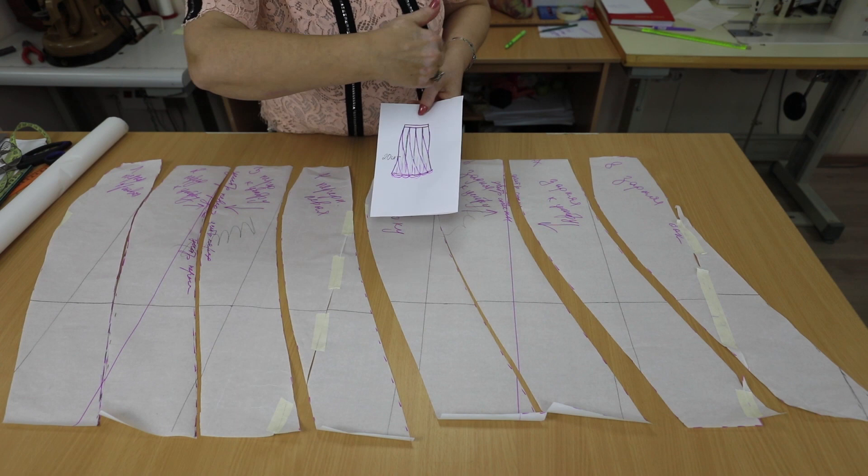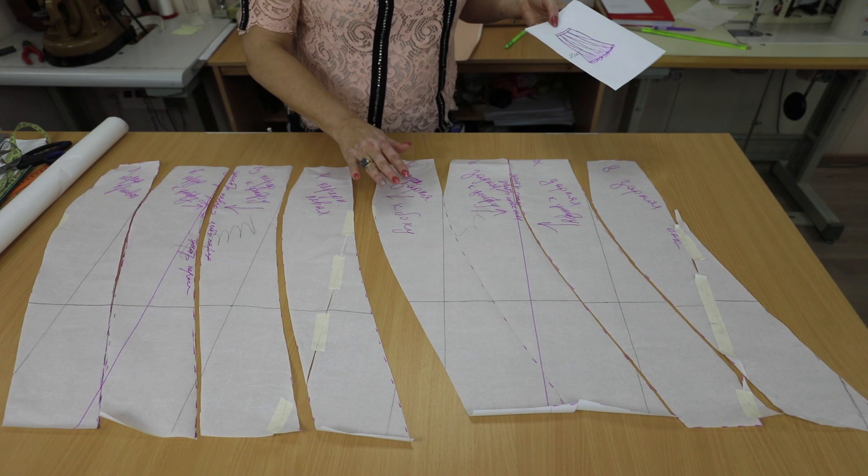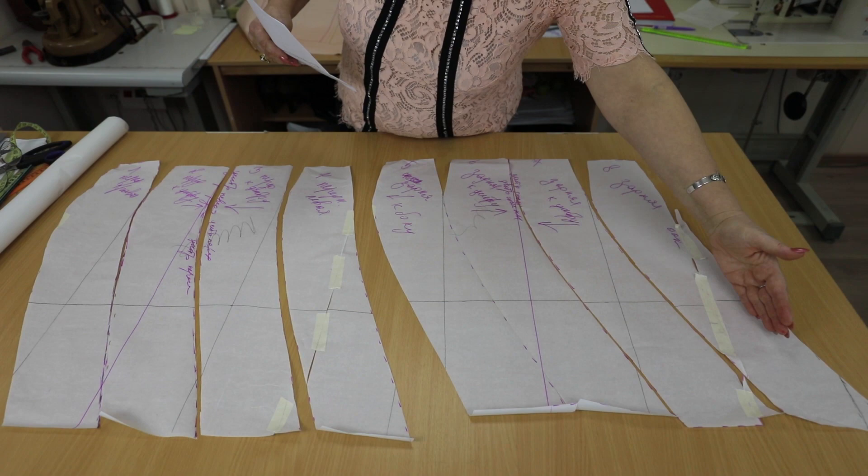Sign and numerate all the details. You should get eight gores. This is the front, and this is the back of the skirt.